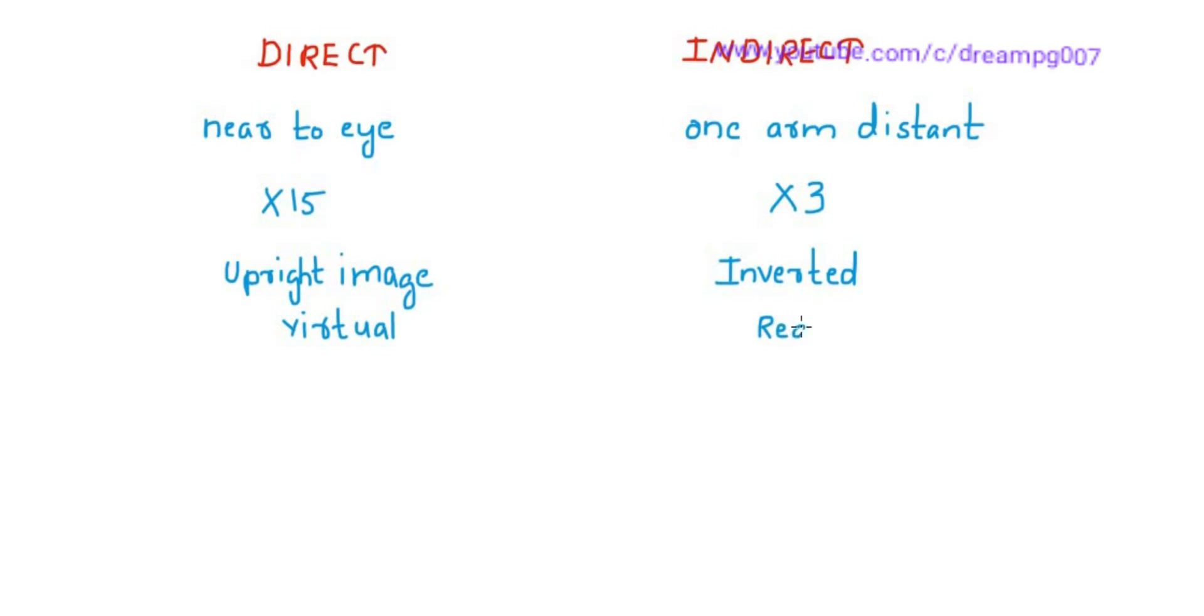Depth perception is absent in direct ophthalmoscopy, whereas it is present in indirect ophthalmoscopy. Illumination is not so bright in direct ophthalmoscopy, whereas a bright illumination is used in indirect ophthalmoscopy, so we can see through a hazy medium.